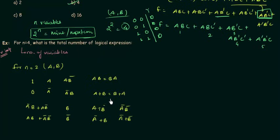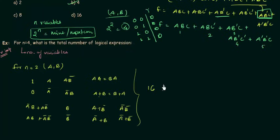Counting all the possible logical expressions for two variables, we get a total of 16 logical expressions.